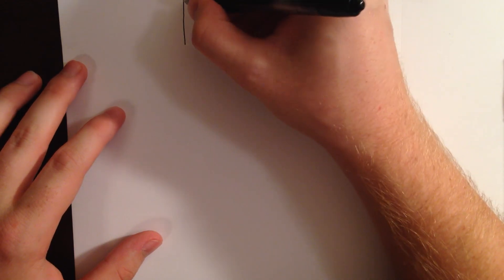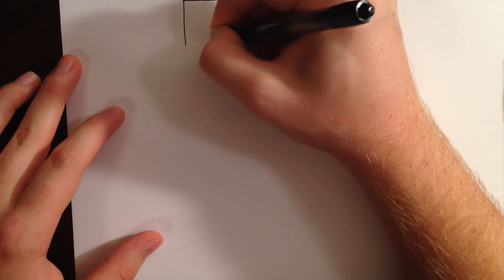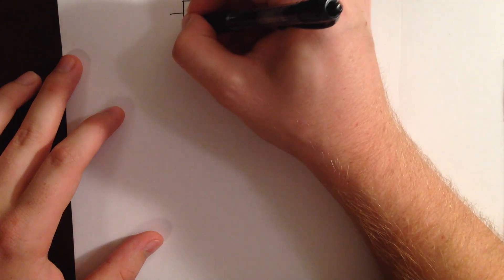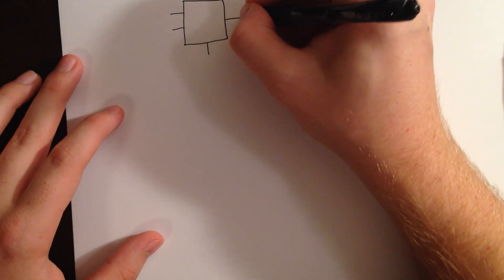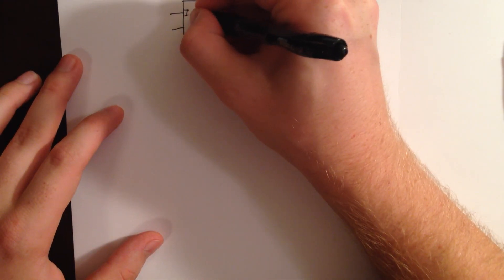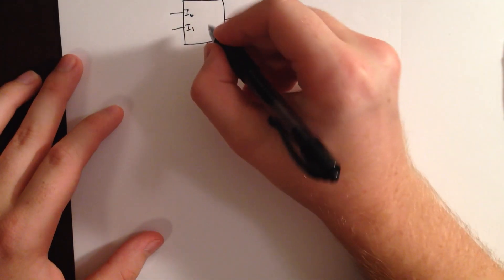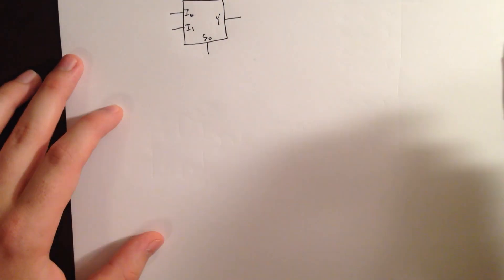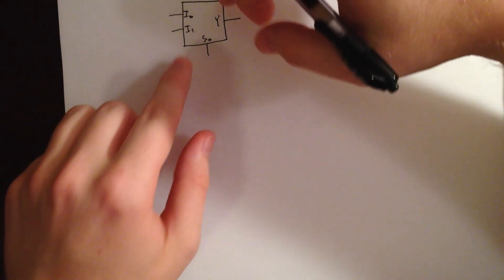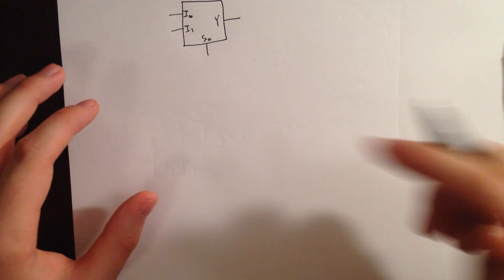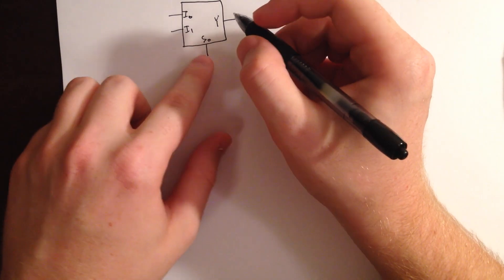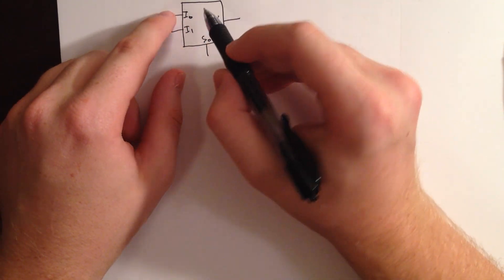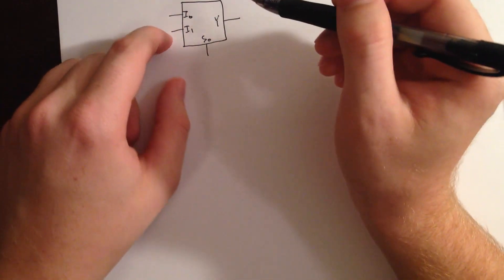As you may have seen from class, a multiplexer is going to look a little something like this. It will have two inputs, a sort of selector switch, and an output. We'll call the two inputs I0, I1, our selector S0, and our output Y. So this whole box right here is kind of just a fancy way of saying whatever your input is for S is going to be your selection of I0 or I1.